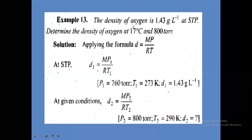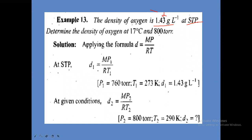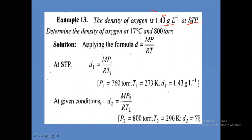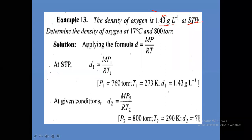Another example: the density of oxygen is given in gram per liter at STP. STP means zero degree Celsius (273 Kelvin) and 1 ATM pressure (180 mmHg, approximately one bar). At STP, the density of oxygen is 1.43 gram per liter. Determine the density of oxygen at 17 degree Celsius.